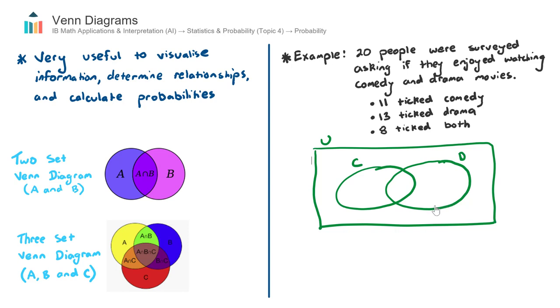When we go to populate the Venn Diagram, it's very important to start at the middle and work our way out. If we start at the top, 11 tick comedy, and this is the comedy set here, I would be asking myself, where will I put the 11? So a good rule of thumb is to always work from the inside and work your way out. This last piece of information says that 8 ticked both. So I can confidently go ahead and place an 8 in the intersection. And this represents that out of the 20 that were surveyed, 8 people ticked that they enjoyed watching both comedy and drama.